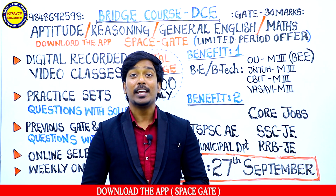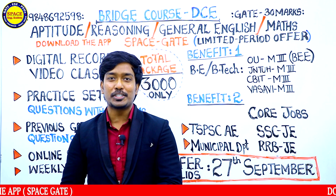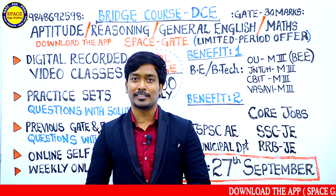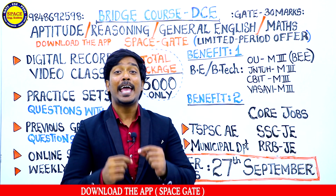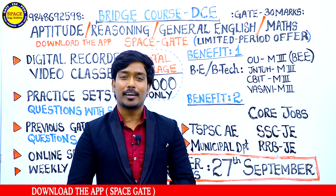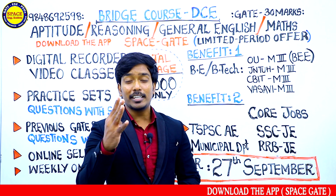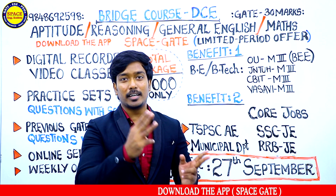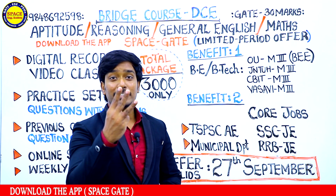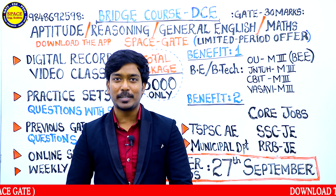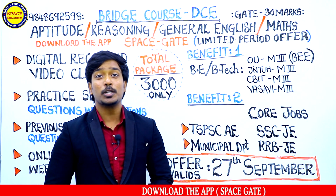the first thing is GATE eligibility. You can write the GATE examination from third year onwards. Third year, you people are going to be eligible for appearing in the GATE examination. Fourth year preparation starts. In third year, eligibility starts; preparation begins from second year onwards.